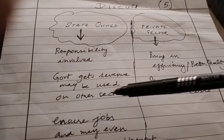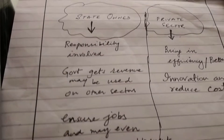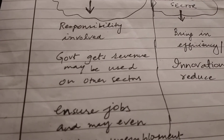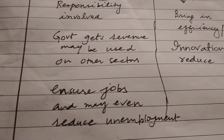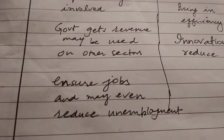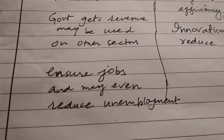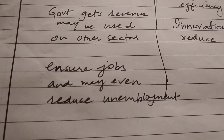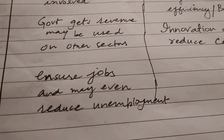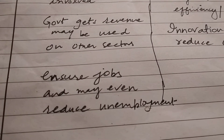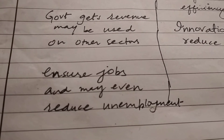The second point in favor is that the government gets revenue — with airline industry ownership, they will earn money, and it is assumed the government will use it for the betterment of other sectors in the economy. The third point is about jobs: people working in the government sector feel more secure, and the government can ensure job security and may even reduce unemployment.